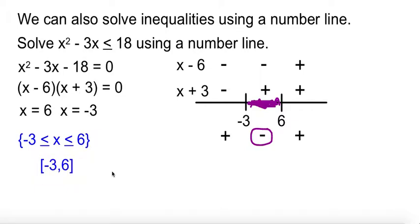Or if we were to use the interval notation, it would be negative 3 to 6 with brackets because it was equal to.